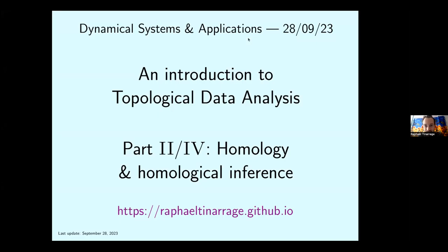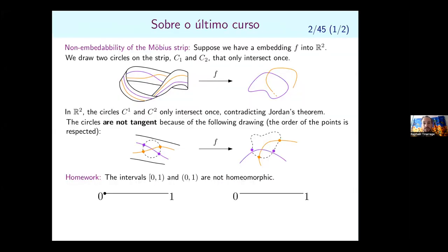This is the second part of our four-lesson mini course about TDA. Coming back to what we discussed two days ago, I was asked a nice question. I gave a proof that the Möbius strip cannot be embedded in the plane by drawing two circles that only intersect once — if you had an embedding you'd obtain two circles in the plane that only intersect once, which is impossible. Then someone asked: what if the two circles are actually just tangent?